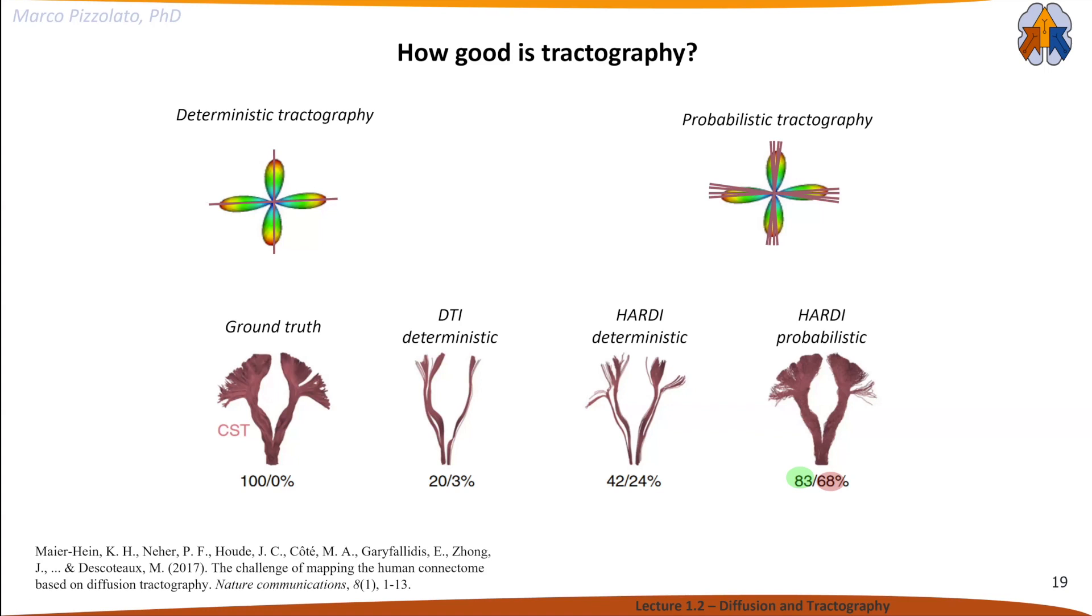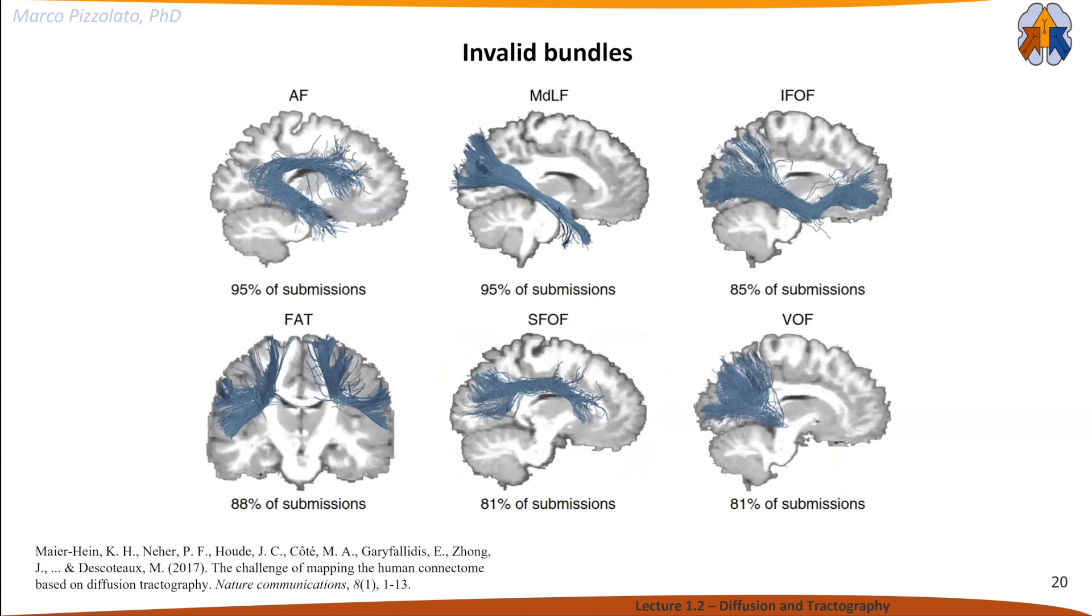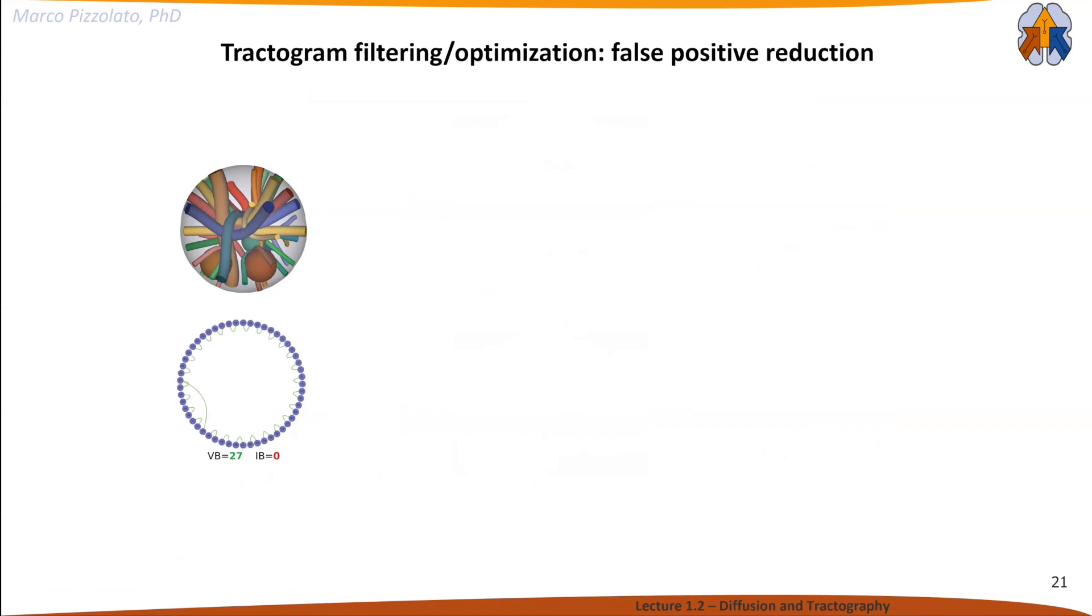Tractography can also generate invalid bundles. This is the same challenge where we see the percentage of submissions. This was organized with ground truth data, so we knew a priori what was good or bad. These are bundles many algorithms found, but in reality they shouldn't exist. They look quite reasonable, but they're actually fake.